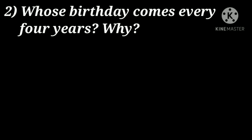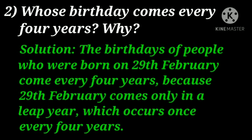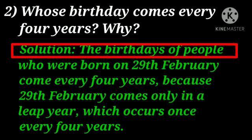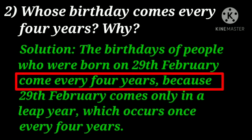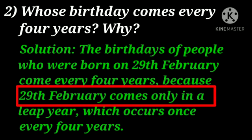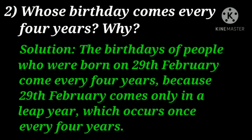Next: whose birthday comes every 4 years and why? The birthdays of people who were born on 29th February come every 4 years, because 29th February comes only in a leap year, which occurs once every 4 years. So whoever is born on 29th February celebrates their birthday after every 4 years, as it is a leap day.